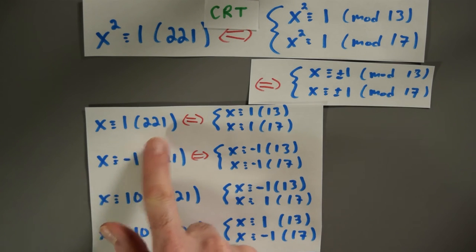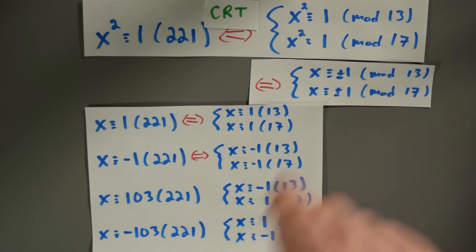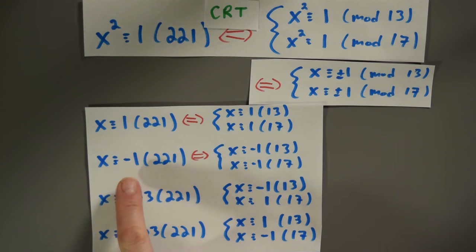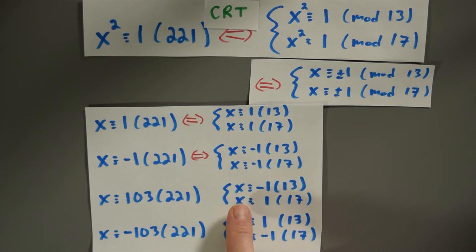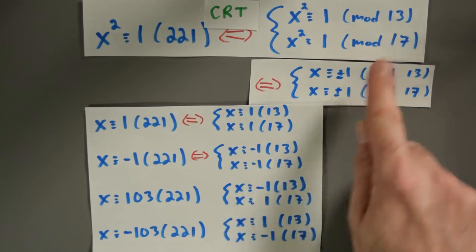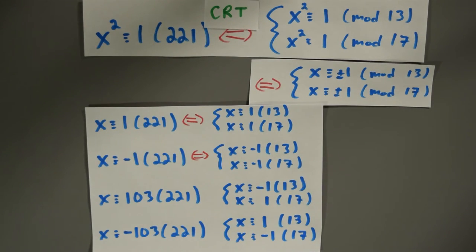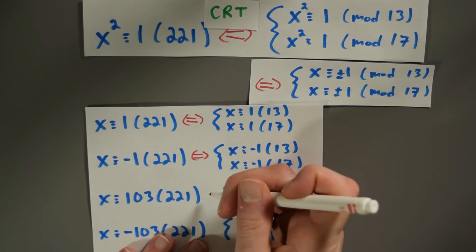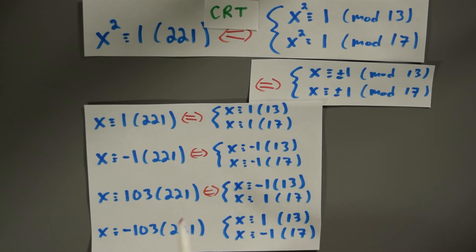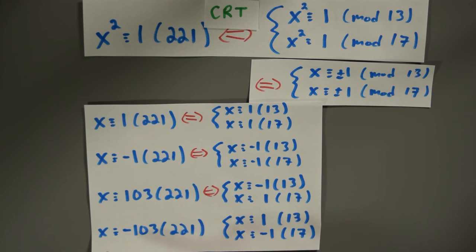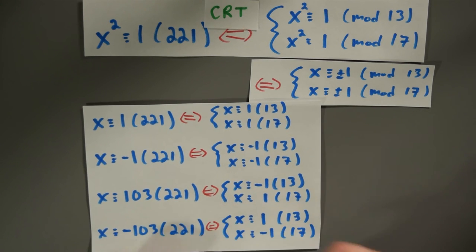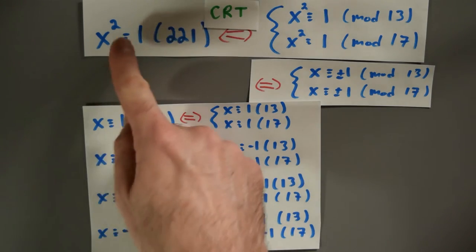We could pick both plus 1, in which case x≡1 (mod 221) by the Chinese Remainder Theorem. We could choose both signs negative, giving x≡−1 (mod 221). Or we could choose mixed signs: if x≡−1 (mod 13) and x≡1 (mod 17), that still gives x squared≡1 mod both 13 and 17, hence mod 221, and the CRT gives x≡103 (mod 221). Similarly, x≡1 (mod 13) and x≡−1 (mod 17) gives x≡−103 (mod 221). You can verify: 103 squared is 10,609, which is exactly one more than a multiple of 221.